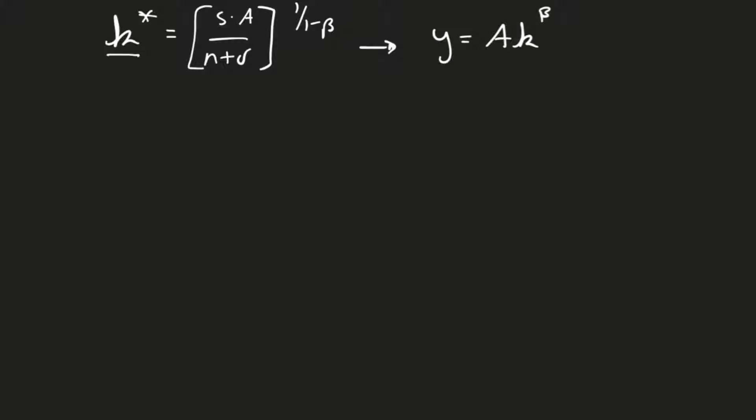So let's go ahead and do that. That means that y star is going to equal just a times, and this is k. k is s times a over n plus delta raised to the 1 over 1 minus beta, but it's that whole thing raised to the beta.